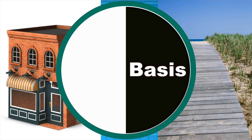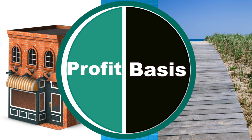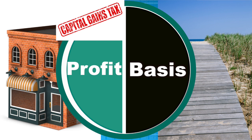Basis is the amount of money the owner has invested in an asset. Profit is what he makes when he sells the asset. Capital gains tax is the percentage the federal and state governments take from the profit.